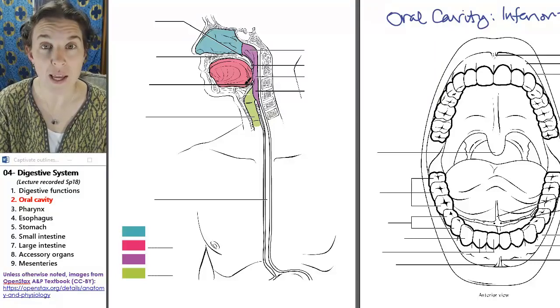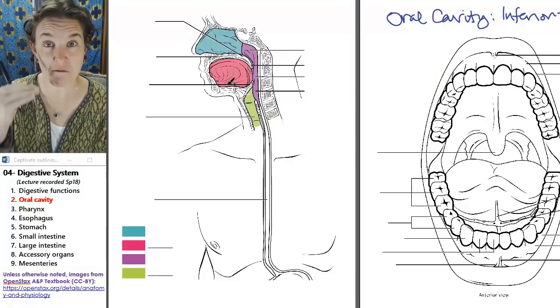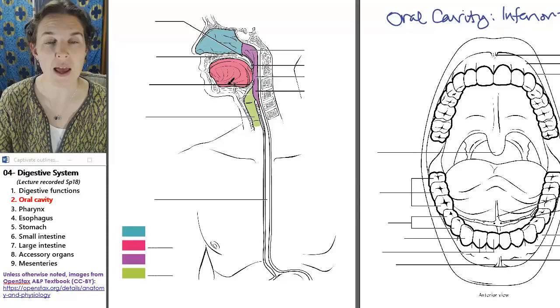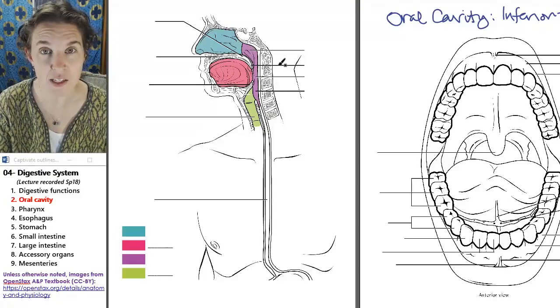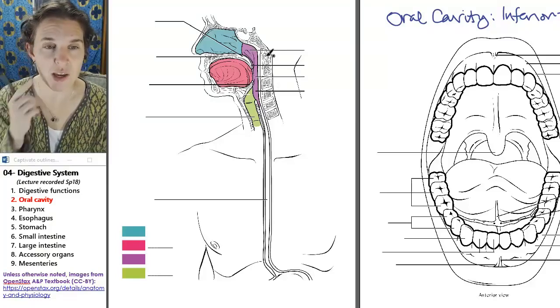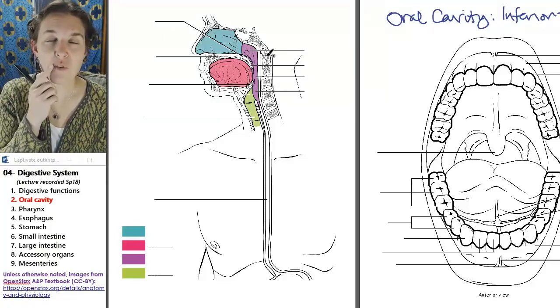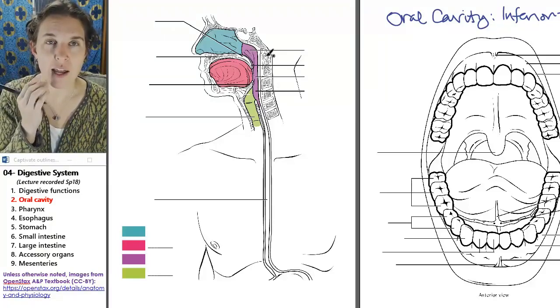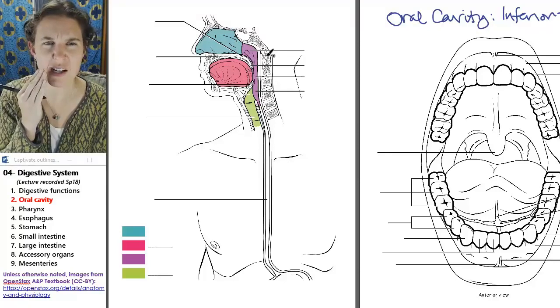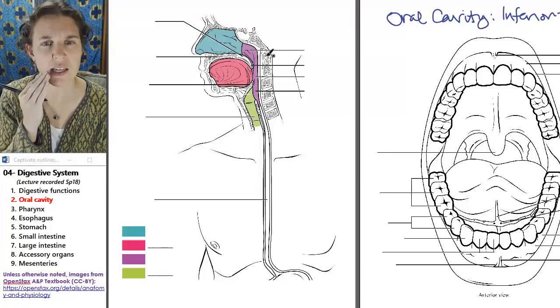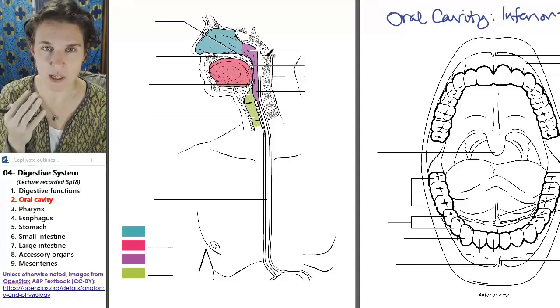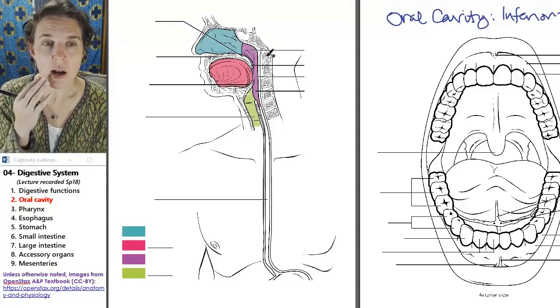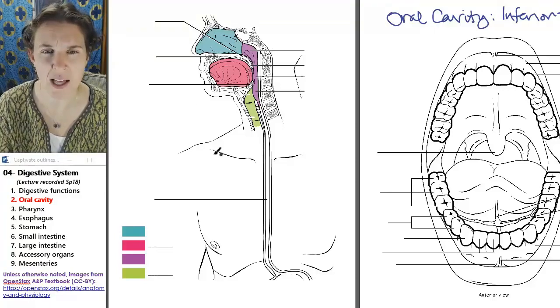So oral cavity is inferior to both the hard and soft palates in your face. So think about it. Feel the roof of your mouth, and you can feel that that's a bone, and it's actually a bone that we will know and name when we do the skull. But that bone is your hard palate.